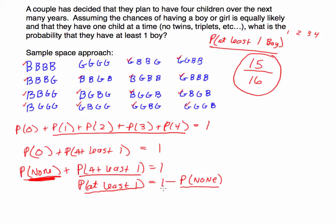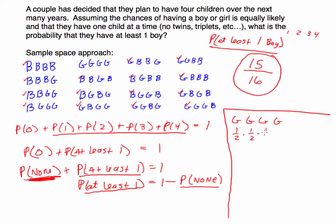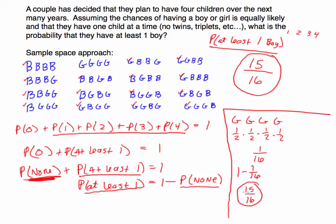Let's apply this to our four-children problem. The probability of no boys means the outcome is girl-girl-girl-girl. The probability of that is one-half times one-half times one-half times one-half, because these are independent trials — each child's sex is independent of the others. That gives us 1/16, the one outcome out of 16 possibilities with no boys. So one minus 1/16 equals 15/16, confirming our earlier answer.